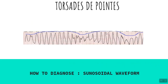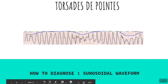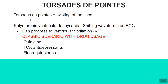Torsades de pointes is a French phrase that literally means 'twisting of the lines,' and as you saw in the ECGs, the pattern is just random lines twisting, turning, and shifting waveforms. It is a very fatal condition and can progress to ventricular fibrillation; the patient often needs cardioversion. Remember classic scenarios: a person with malaria who took high-dose quinidine, a patient using tricyclic antidepressants, or a patient using fluoroquinolones for a respiratory infection — they can all have torsades.